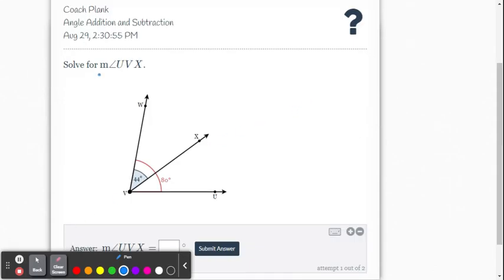On this one, it wants us to solve for the measure of angle UVX. That's this angle. We're going to use the angle addition postulate again, so x plus 44, those two parts equal the whole, which is 80 degrees.